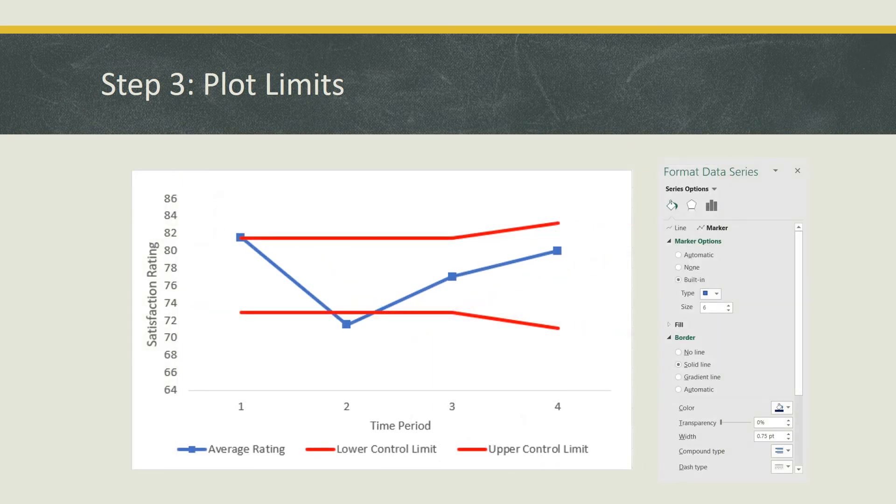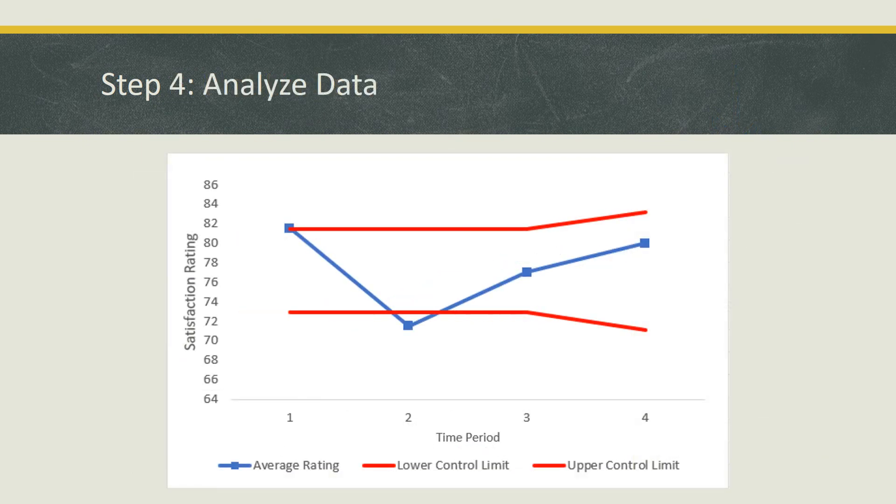It's time to add markers to the chart now that you have your line set up. This can be done by right clicking on the line showing the average rating, which will prompt the box to appear on the right. Click on the paint bucket, click on marker right below that, and go ahead and select the marker options under that. You can select different types of markers at different sizes depending on how big or small you want them to be. I went ahead and clicked on the built-in function, selected square markers, and set the size to 6.